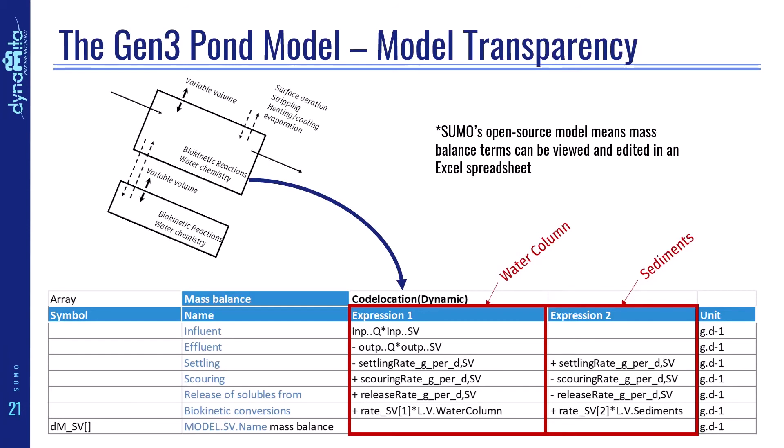And what do we mean by model transparency? Exchanges between the water column and the sediment layer are identified explicitly as line items in the mass balance. And thanks to SUMO's open source model structure, these can be viewed and even edited by you in an Excel spreadsheet.